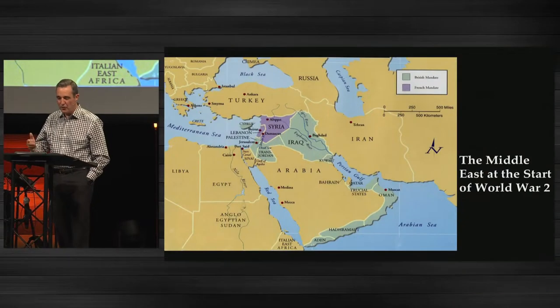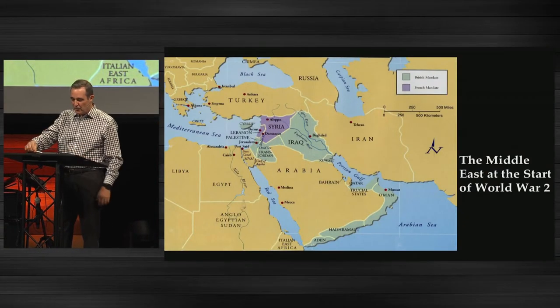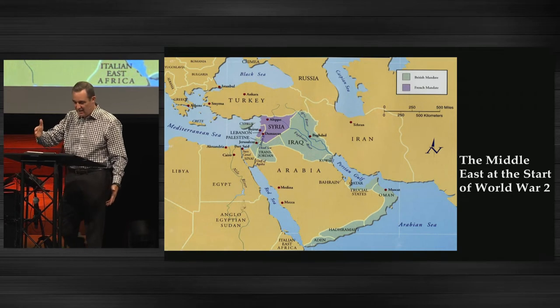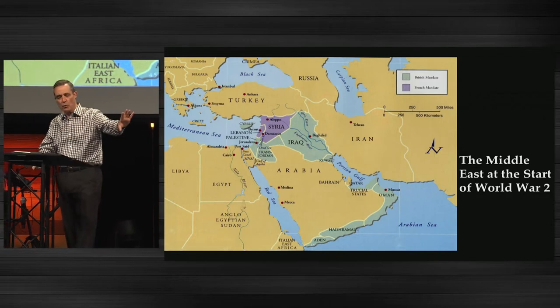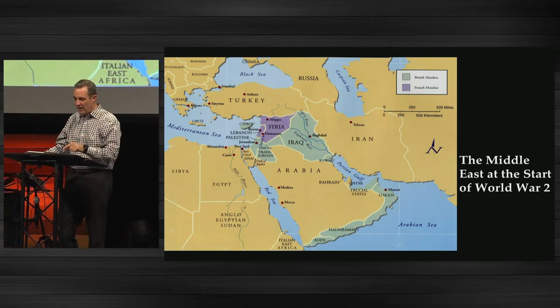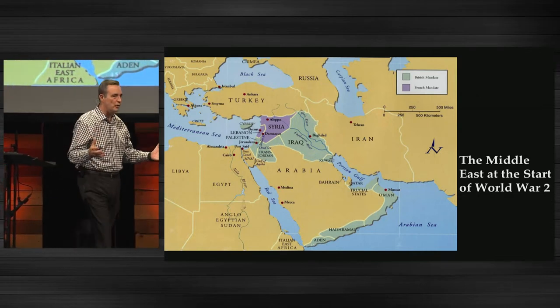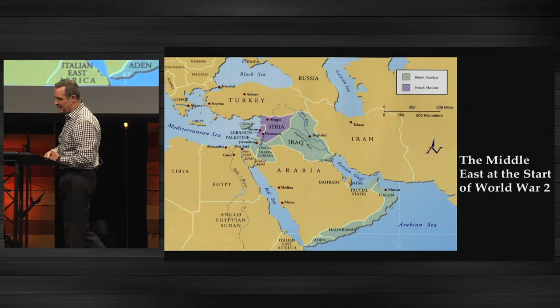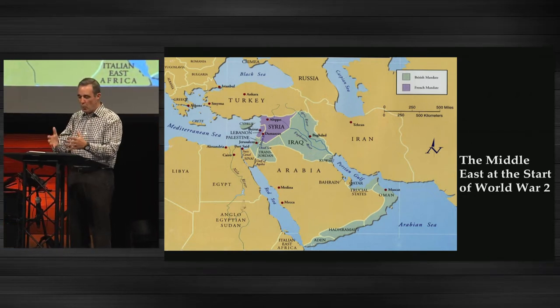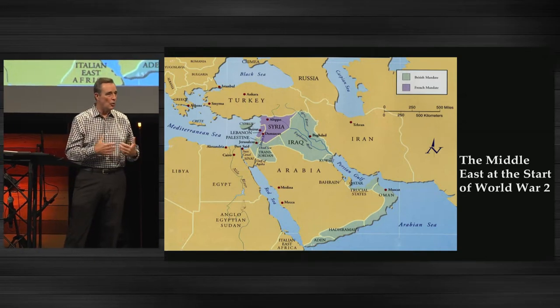At the beginning of World War II, this is what the map looks like. In green you'll see Palestine — that is the modern nation of Israel, but in those days it was called Palestine, an ancient name the Romans gave this territory. You'll see Transjordan — think the nation of Jordan today — under British rule. Syria and Lebanon are under French rule. This is what the Middle East looked like at the start of World War II.